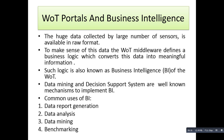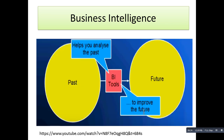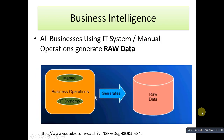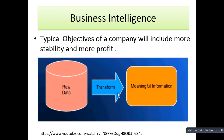Some common uses of business intelligence include data report generation, data analysis, data mining, and benchmarking. Business intelligence has two aspects — past and future. It helps you analyze the past and improve the future. All businesses using IT systems or manual data generate raw data from their business operations, and this raw data is what gets transformed into meaningful information.